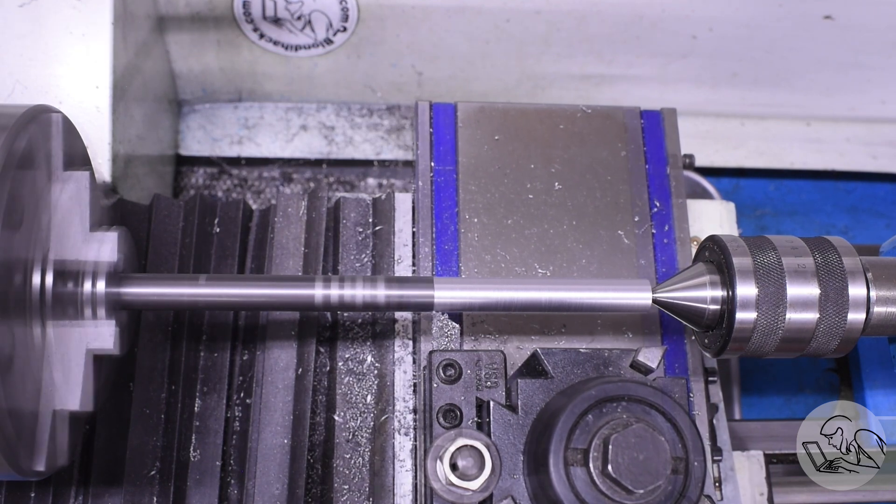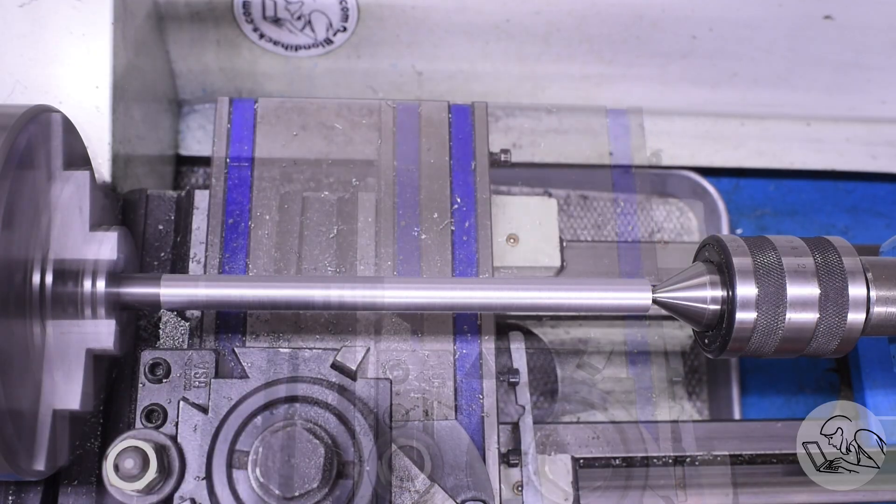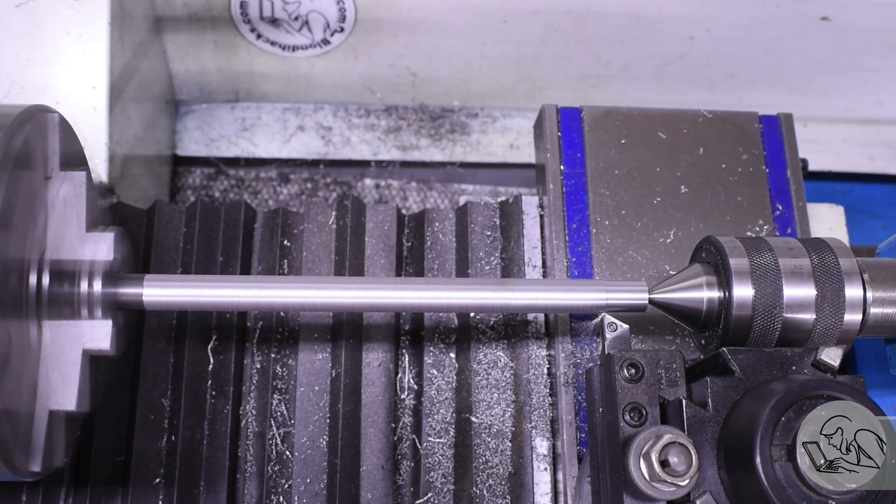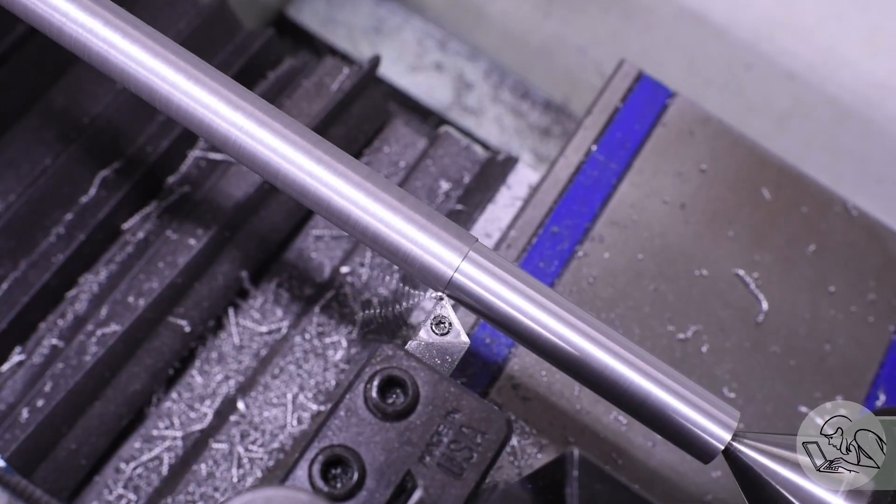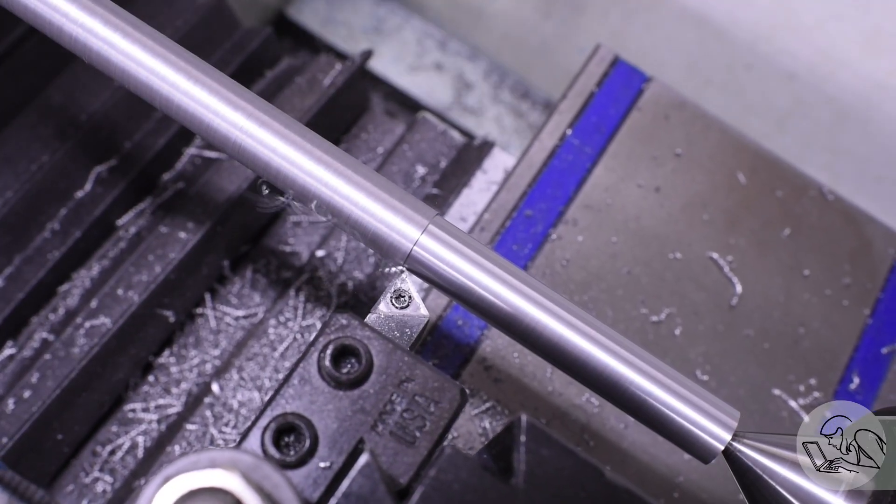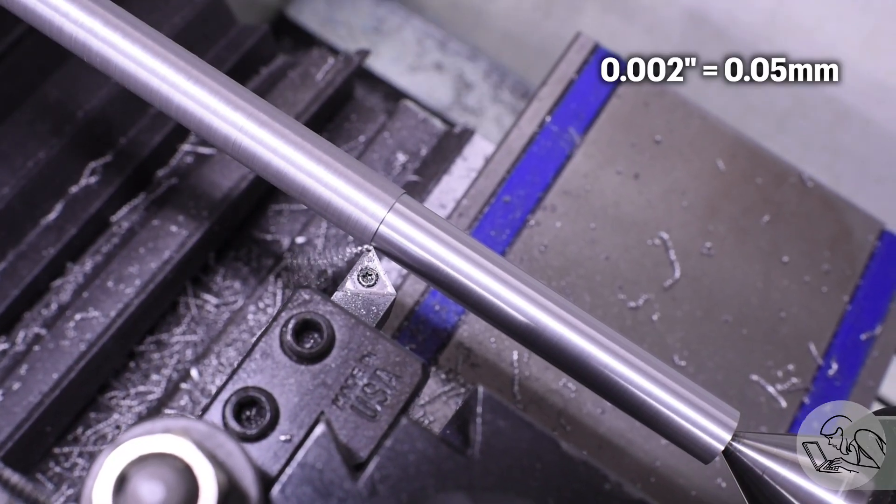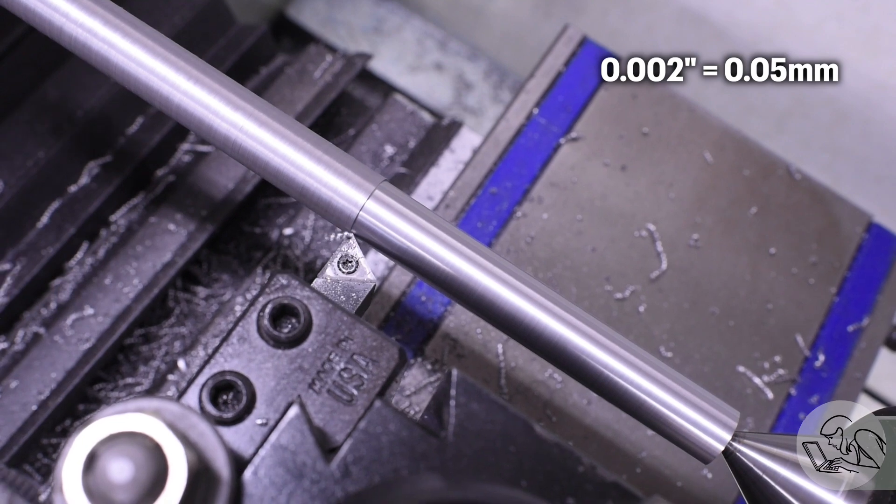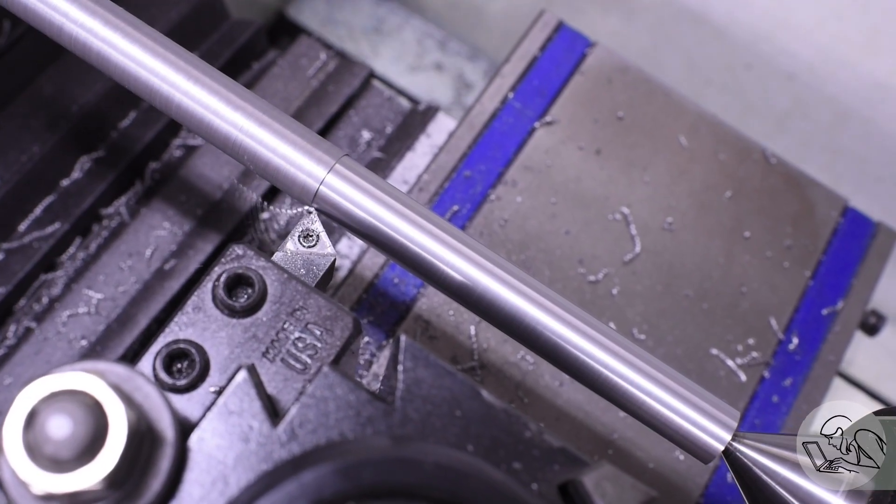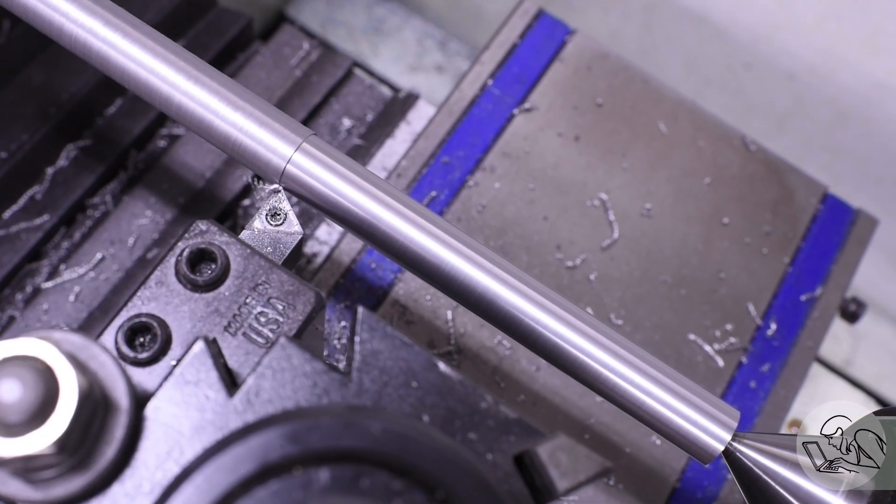When choosing your order of operations think about which dimensions on the part are critical because the setup and the order that you do features in can make it easier or more difficult to hit a particular dimension. In this case, for example, I'm turning the OD of this part all at once which is very good for concentricity if that was important but less good for dimension if that was important. With a long flexible part like this, the center of it is guaranteed to be a couple of thou oversize because it's going to deflect in the middle as the cutter passes over it. So if it was really crucial that the diameter of this part be consistent all the way down, then that would affect the setup and possibly the order in which you do various features. You might have to use a steady rest or a follow rest or other similar setups.